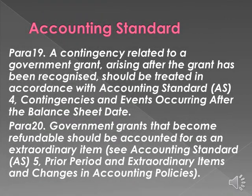Para 19: A contingency related to a government grant, arising after the grant has been recognized, should be treated in accordance with Accounting Standard AS 4. Para 20: Government grants that become refundable should be accounted for as an extraordinary item — see Accounting Standard AS 5: Prior Period and Extraordinary Items and Changes in Accounting Policies.